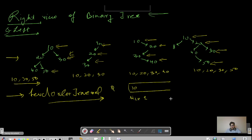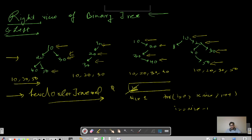We get the size of the queue — here the size is 1. We run a for loop up to the size, so it runs one time. Whenever i equals size minus 1, we are at the last node of that level. We pop out node 10, which is also the last node of this level, so we print 10 and push its children. Please pause and watch the level order traversal video if needed.